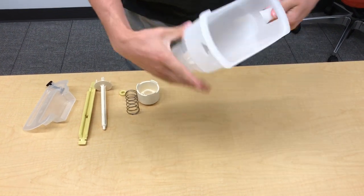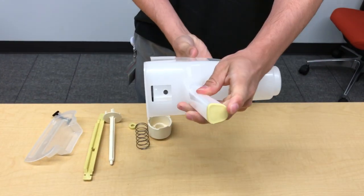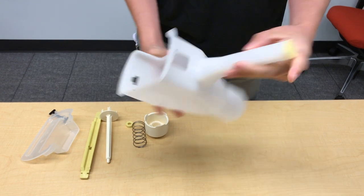Alright, so the first thing you want to do is take the empty container. This one's the mustard - you can tell because it's yellow.